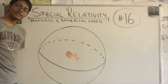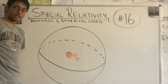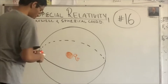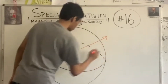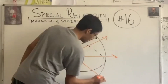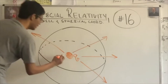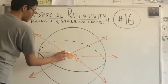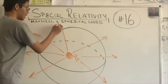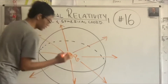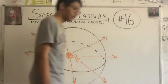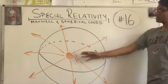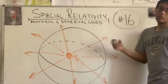Since we have a charge Q, I'm obviously going to have an electric field, because charges create electric fields. I'm going to denote that electric field using my orange marker. This electric field is going to emanate radially outwards, because it's going to be some kind of a positive charge. The electric field radiates outwards in all directions.